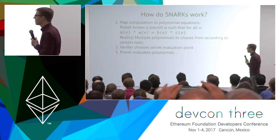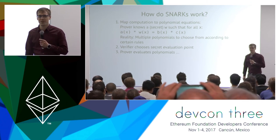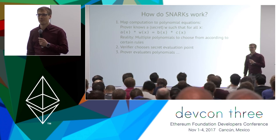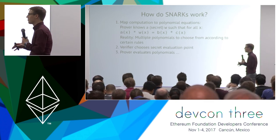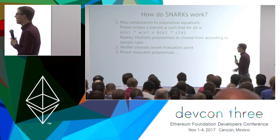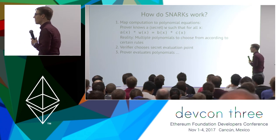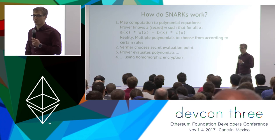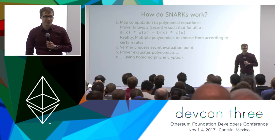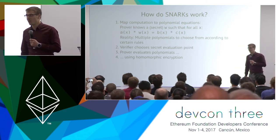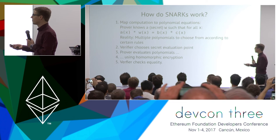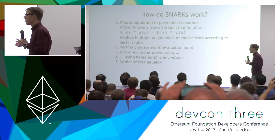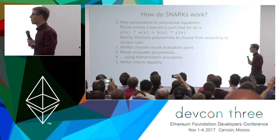This doesn't quite work as-is: the verifier has a secret point, the prover has a secret polynomial, and neither wants to reveal their secret. We have to add another tool: homomorphic encryption. With homomorphic encryption, some magic happens and the verifier can check whether the two polynomials are equal.